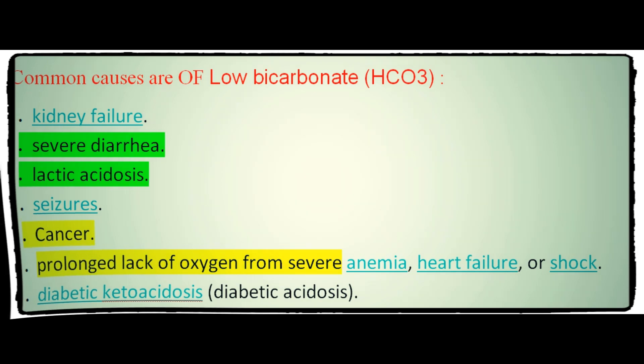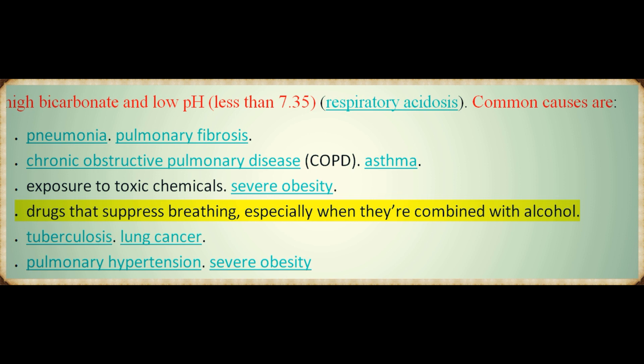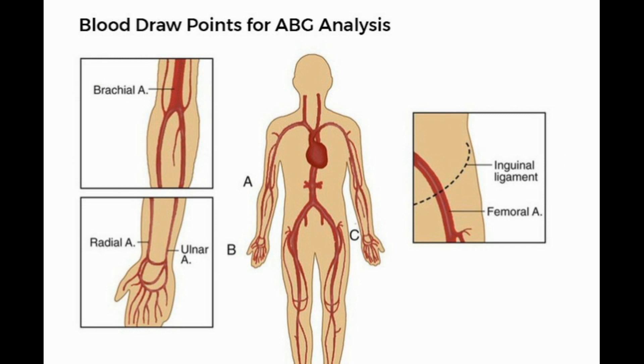High bicarbonate (HCO3) with low pH (less than 7.35) is called respiratory acidosis. Common causes include pneumonia, COPD, asthma, pulmonary fibrosis, exposure to toxic chemicals, drugs that suppress breathing (especially combined with alcohol), tuberculosis, lung cancer, pulmonary hypertension, and severe obesity. High bicarbonate with high pH (greater than 7.45) is called metabolic alkalosis, with common causes including chronic vomiting, low potassium levels, and hypoventilation with decreased CO2 elimination.